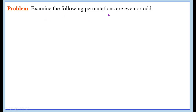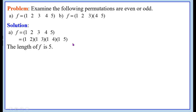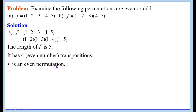Examine whether the following permutations are even or odd. First: F equals the cycle (1, 2, 3, 4, 5). This is a cycle of length 5. Since a cycle of length n has n-1 transpositions and n=5, it must have 4 transpositions: (1, 2)(1, 3)(1, 4)(1, 5). Therefore F is expressed as a product of 4 transpositions. Since 4 is even, F is an even permutation.